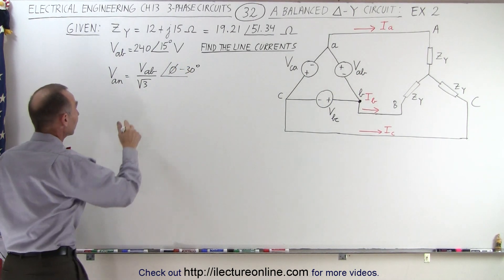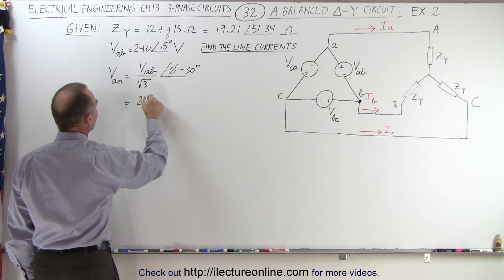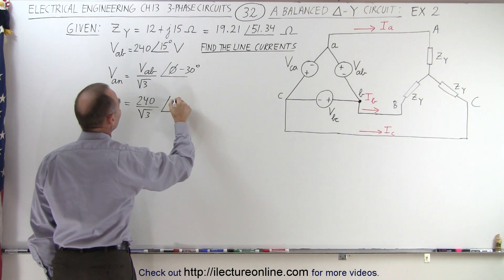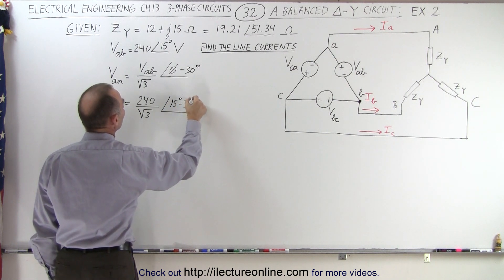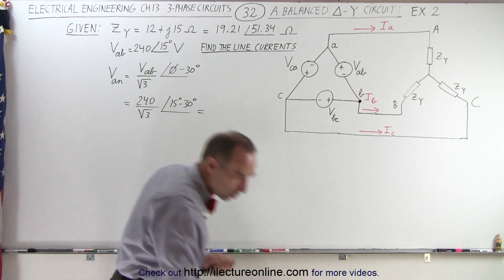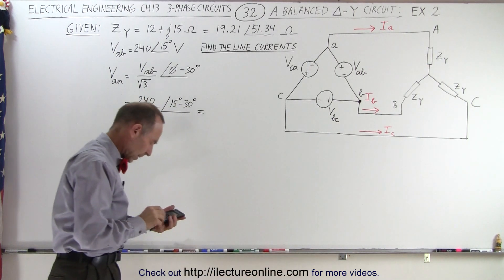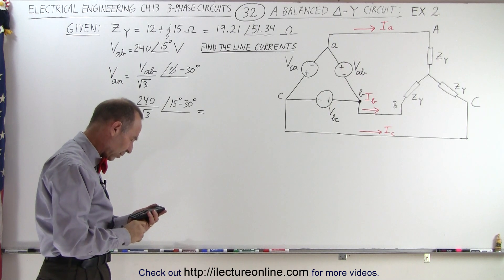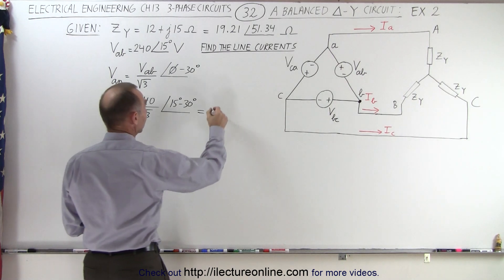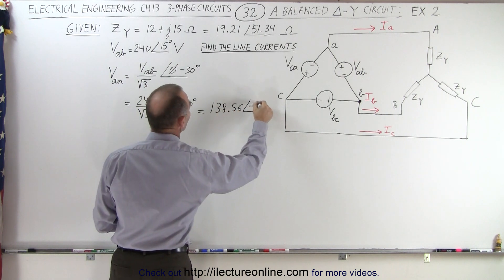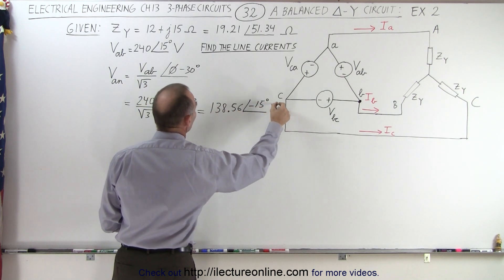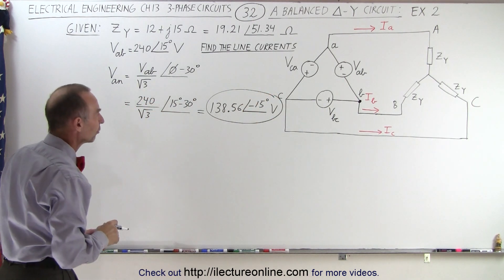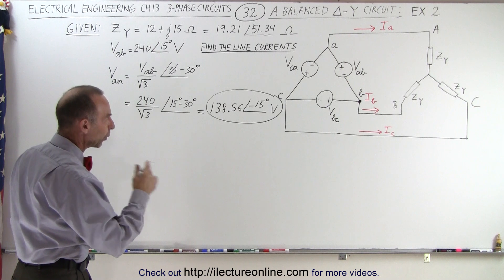Plugging in the values, this is equal to 240 volts divided by the square root of 3 with a phase angle of 15 minus 30 degrees. So this becomes 240 divided by the square root of 3, which is 138.56 with a phase angle of minus 15 degrees, in volts. There we have the equivalent phase voltage for the equivalent Y-Y circuit.